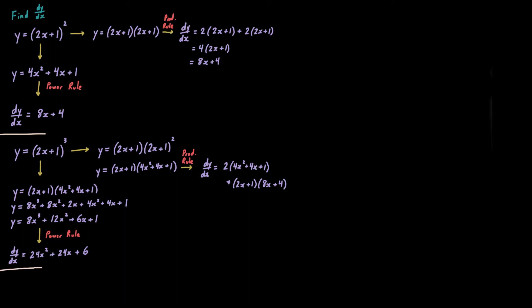But what if I were to change that exponent of 3 to a 100? Do you want to foil this thing 99 to 100 times? Unless you're a masochist, of course you don't. With product or power rule, this problem is a frowny face — ain't nobody got time for that. So hopefully there exists a better technique, and indeed there does. It is called the chain rule.